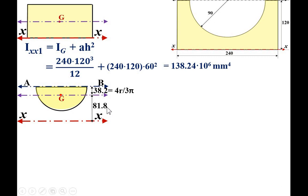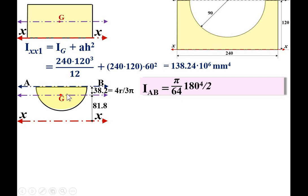The moment of inertia of the semicircle about axis AB equals (π/64)·d⁴ divided by 2 — because for a full circle it is π/64·d⁴, and this is a semicircle, so we divide by 2. Note that this is the moment of inertia with reference to AB, so there is no parallel axis correction here. Simplifying gives I_AB = 25.76×10⁶ mm⁴.